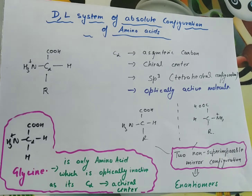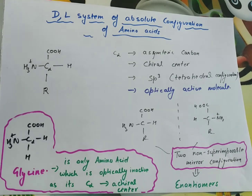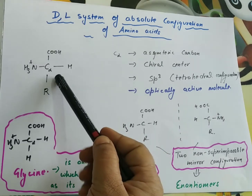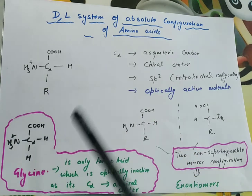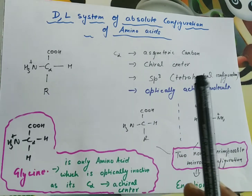Today we are going to discuss the absolute configuration of amino acids by the DL system. We all know that there are 20 basic amino acids, which are alpha amino acids. They are called alpha amino acids because the C-alpha is attached to four different groups.